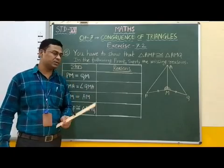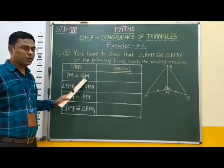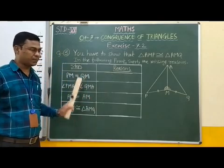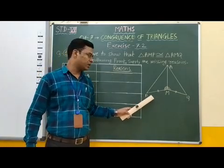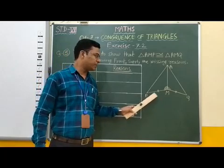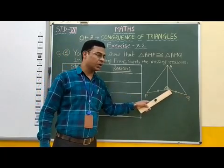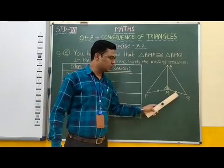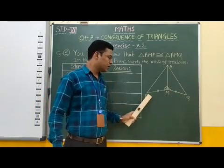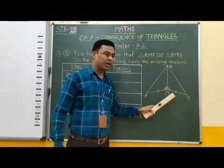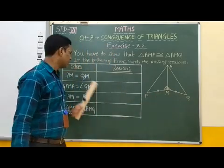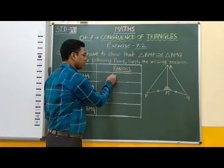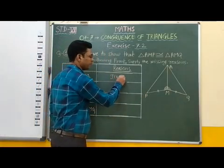The first step is PM is equal to QM. If you observe the figure, it is given that PM is equal to QM, indicated by the double-cut symbol on both sides, meaning these two sides are equal. Therefore, the reason for this step is: given.